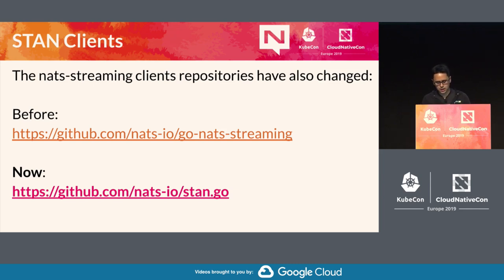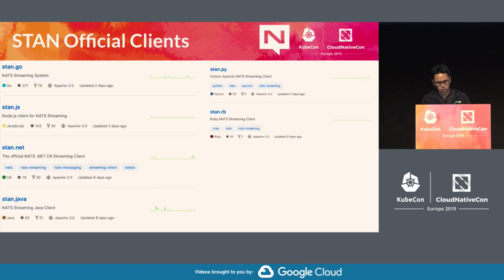Similar to NATS clients, you can find stan.go, stan.py, stan.net, and stan.rb. These are all the implementations for the request-response protocol for NATS Streaming, also known as STAN.